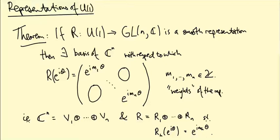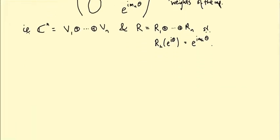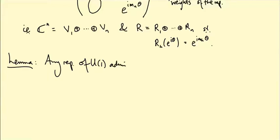We're in luck because we can apply the theorem about complete reducibility. This theorem says that if our representation admits an invariant inner product, then it splits as a direct sum of irreducible sub-representations. So the first thing I need to do is to show that applies — that any representation of U(1) admits an invariant inner product.